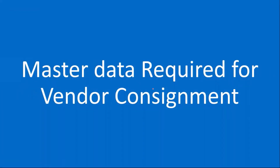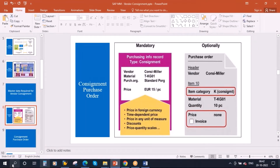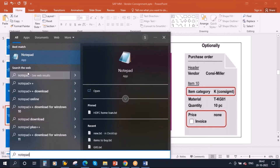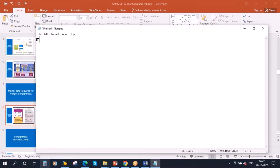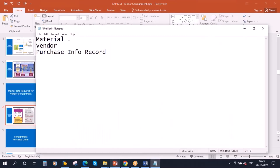Now let's look at the master data required for vendor consignment. Apart from your normal purchasing activities where you need a material and a vendor, for consignment you also need a purchasing info record — this is mandatory. You will create a purchasing info record with the info record category set to consignment. I will show you this in the system.